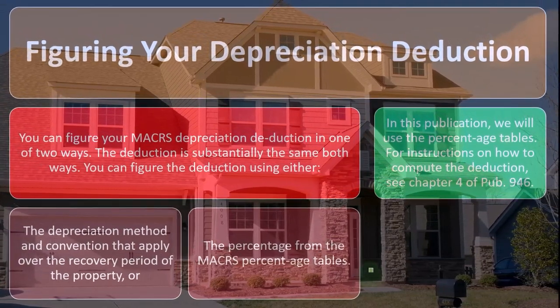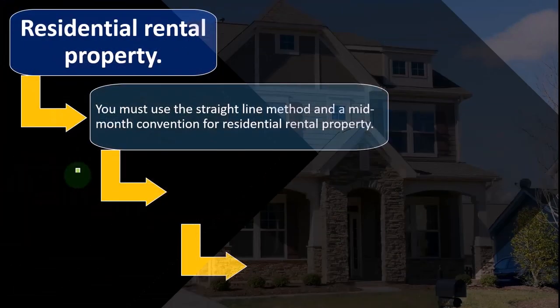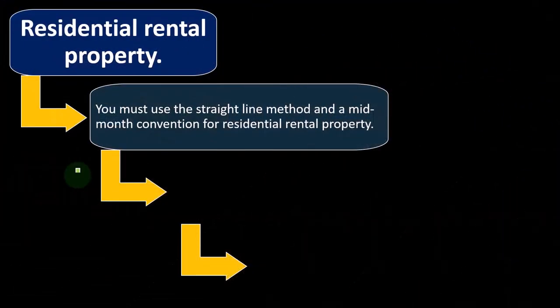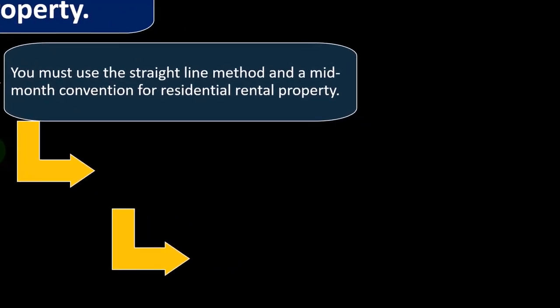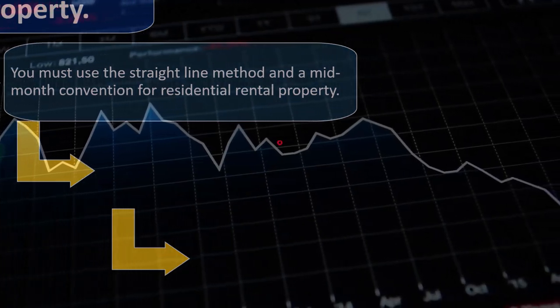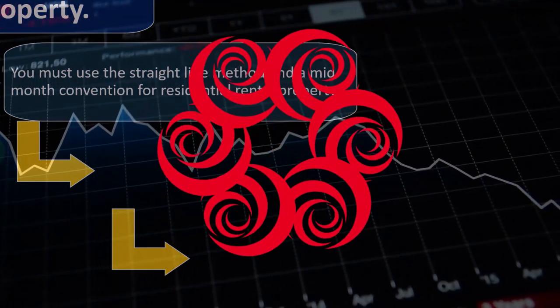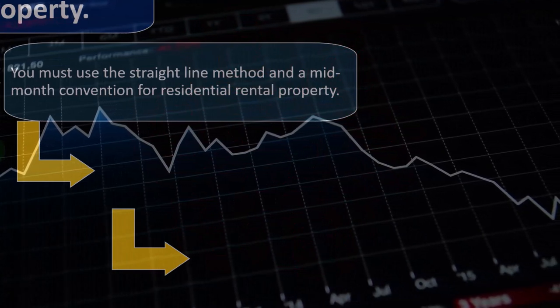You could see chapter four, publication 946 if you choose. For residential rental property, you must use the straight-line method and a mid-month convention. So for the big stuff — the actual property itself — it's straight line, which is the most basic convention, the first thing we'd think of when we think of depreciating, but it's the worst one in comparison to an accelerated method like double declining, because we would rather get depreciation sooner rather than later.